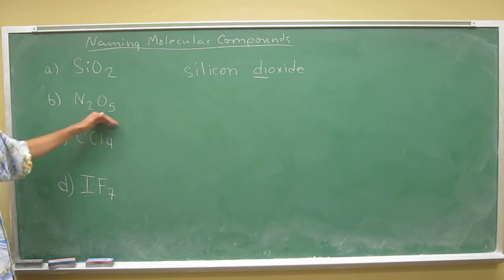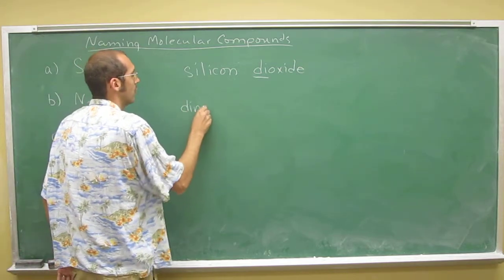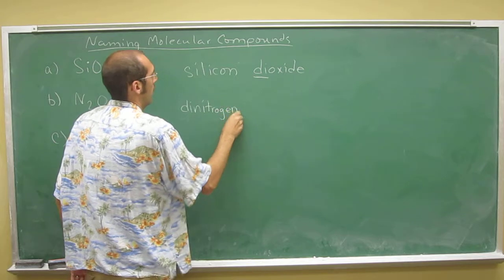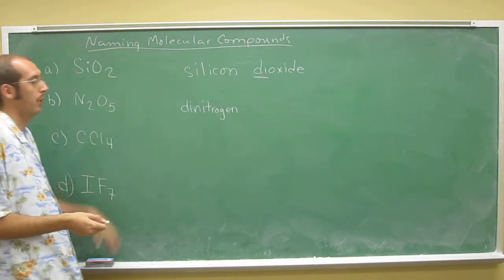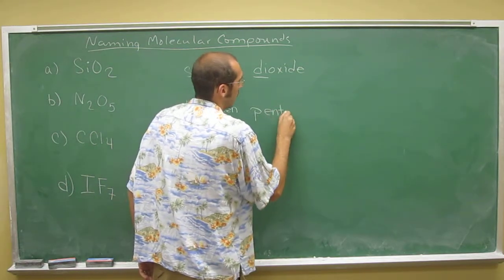Okay, so let's try this one. So this one has two nitrogens, so we don't just put nitrogen, we put dinitrogen. And what's the prefix for five? Pent. Pentoxide.